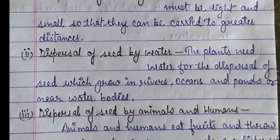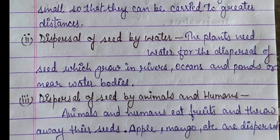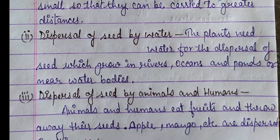Second, dispersal of seed by water. The plants need water for the dispersal of seeds which grow in rivers, oceans, and ponds, or near water bodies.